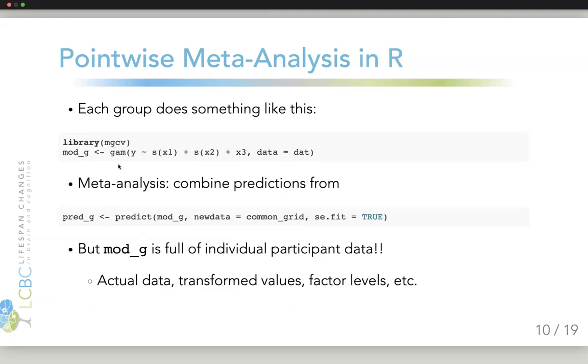However, each model mod G would be full of individual participant data, so fitting a model and sending that model to somebody would also send all the individual participant data, unless you're careful, because those things are typically part of the R objects that make up the models.